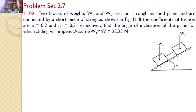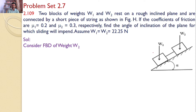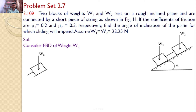The problem is self-explanatory. I would like to find the value of alpha such that the sliding will just be impending, with coefficient of frictions 0.2 and 0.3. Let us draw the free body diagrams for W1 and W2. First, the free body diagram for W2. The forces acting on W2 are the self-weight, normal reaction N2, frictional force 0.3 × N2, and tension T in the string.